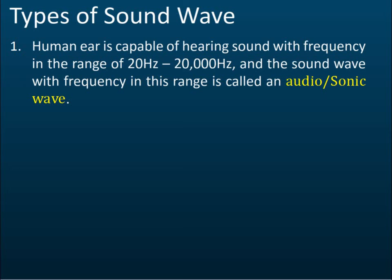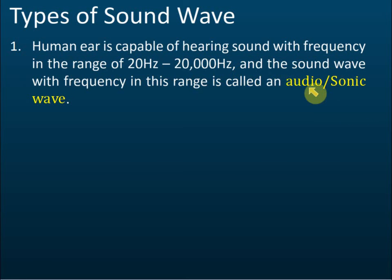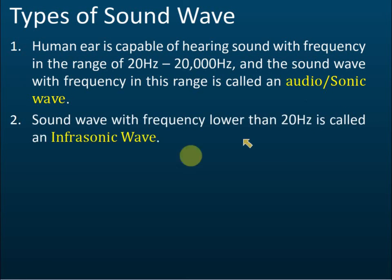We classify sound waves into three groups according to the range of frequency, and whether they can or cannot be heard by human beings. A normal young person is capable of hearing sound with a frequency in the range of 20 Hz to 20,000 Hz. Sound with frequency within this range is called the audio wave or the sonic wave. Sound with frequency lower than 20 Hz is called infrasound.